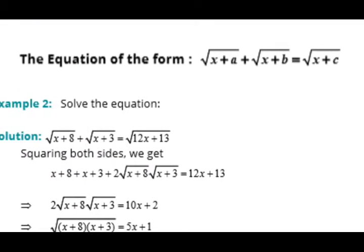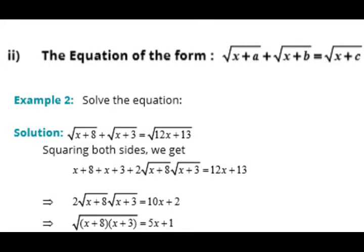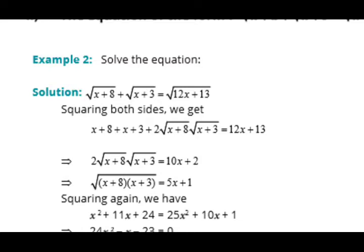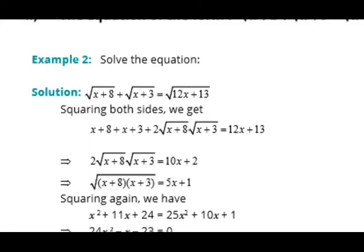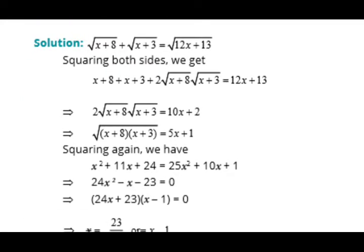Now for the second type, we have radical signs where all expressions underneath are linear equations. We directly square both sides. On the left-hand side we apply the formula (a + b)² = a² + 2ab + b², and on the right-hand side there is only a single value whose radical sign is removed by squaring. We then move all values except the radical term to the right-hand side.